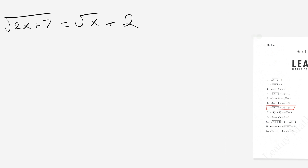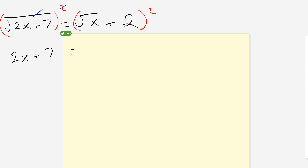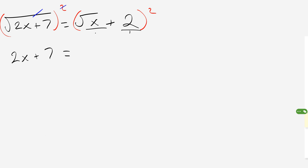Remember, the idea is that you square both sides — the left-hand side and the right-hand side. On the left-hand side, 2x plus 7 is being squared and square rooted at the same time, so those operations cancel, giving simply 2x plus 7. Now the right-hand side is where we have to be careful. The most common mistake is just saying x plus 4 — where you square root x and call it x, and square the 2 and call it 4. That is incorrect. We are squaring both sides, not squaring each term individually.